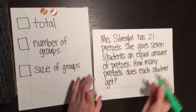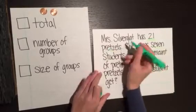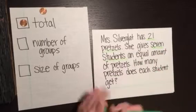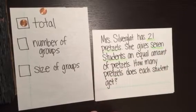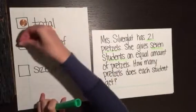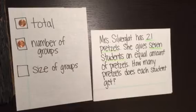Let's start by looking at our problem. She has 21 pretzels, so that's our total. She gives seven students an equal amount of pretzels. Is that the number of groups or the size of the groups? What do you think? It's the number of groups. What we don't know is the size of the groups.